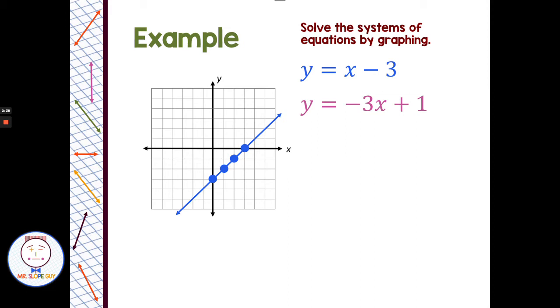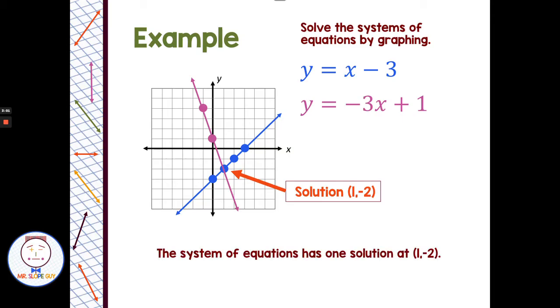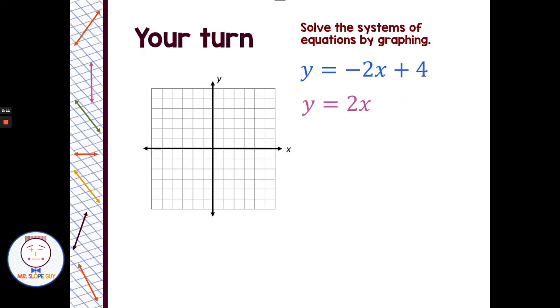Then graph y equals negative 3x plus 1. I start at a y-intercept of positive 1, then I use my slope, negative 3 over 1. I could go down 3, right 1, or up 3, left 1, and get the pink line. Now, the solution for this system of equations is the ordered pair where they intersect. Those two lines cross at 1, negative 2. So my solution, an x of 1, a y of negative 2, and I'm going to write that as an ordered pair: parentheses, 1, comma, negative 2.